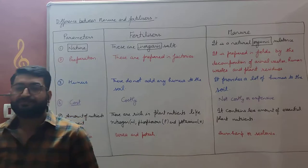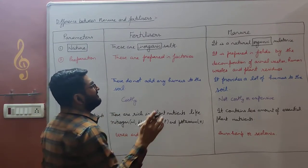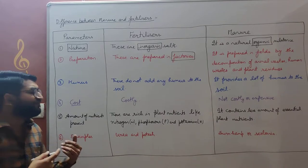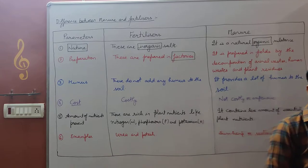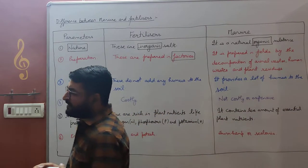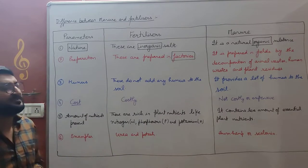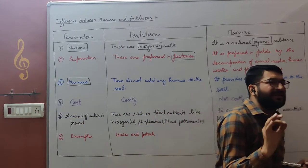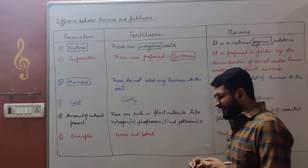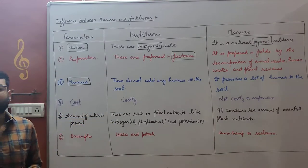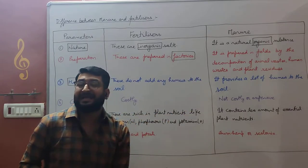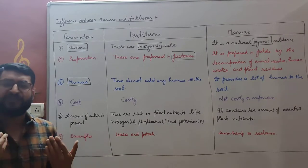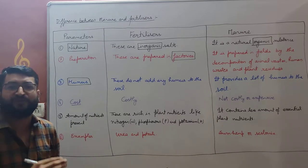Next, preparation. Fertilizers are prepared in factories and industries. Whereas manures are prepared in farms and open field areas by the decomposition of organic material — by the decomposition of human waste, animal excreta, and agricultural waste. Next, humus. Fertilizers do not add any organic content or humus to the soil and do not perform humification. Whereas manures add a large amount of humus to the soil, increasing the organic content and fertility of the soil.